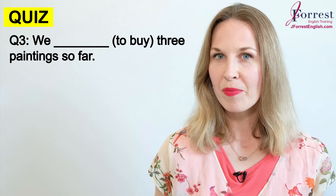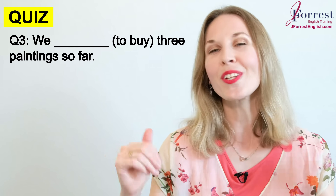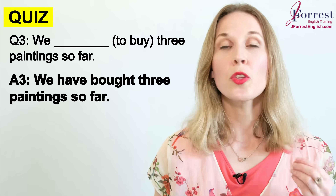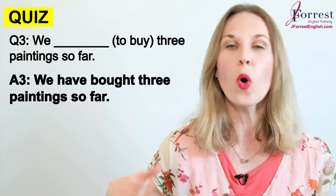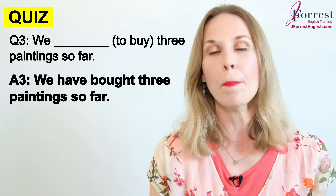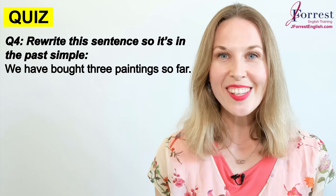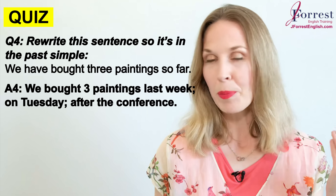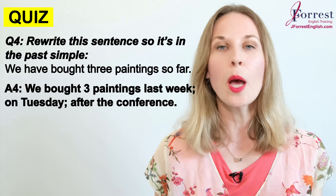Question three: 'We ___ three paintings so far.' The answer is: 'We have bought three paintings so far.' Present perfect, because it's possible to buy more paintings — so it's an unfinished time reference. Question four: Rewrite the sentence in the past simple. 'We bought three paintings' plus a past time reference — last week, yesterday, an hour ago. You simply need a past time reference.